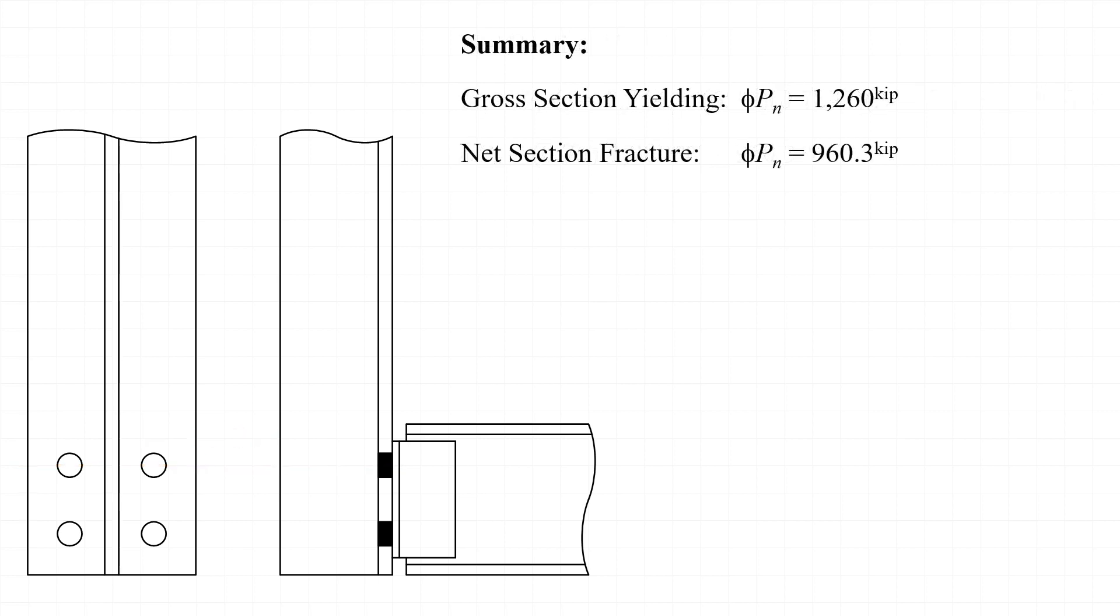So in summary, we have a gross section yielding strength, φPn equal to 1,260 kips, and we have a net section fracture design strength, φPn of 960.3 kips. The lower of these two strengths governs, and we end up with an available strength, φPn equal to 960 kips.